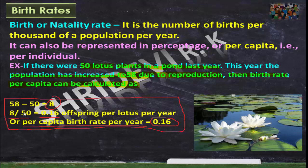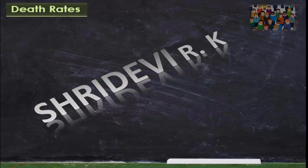This is the procedure to calculate birth rate — that is per capita per year. Remember, birth rate has a positive effect on population density, and it is also known as natality rate. Now, one more attribute of the population is death rate.